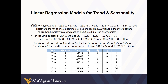After we run a regression model predicting sales with dummy variables for quarter and time for trend, we find that relative to the fourth quarter, e-commerce sales are about $22,000 lower in the other quarters. We can use the model to predict values just like any other regression model we've had experience with.